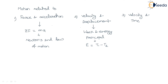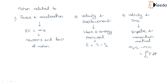The third term is velocity and time, so we are defining motion with velocity and time. This represents kinetics where we consider both work and energy as well as the concept of velocity and time. This is defined by the impulse and momentum principle. So we need to discuss two areas: velocity and displacement related to work and energy, and velocity and time related to impulse and momentum.